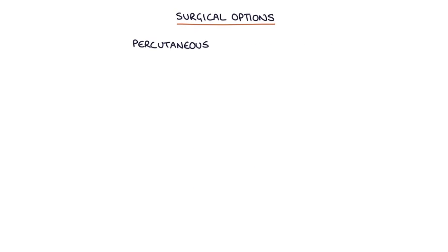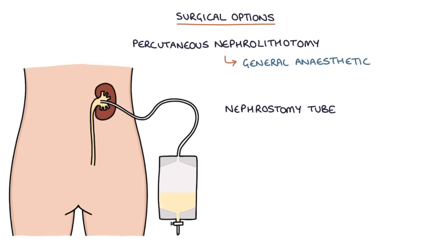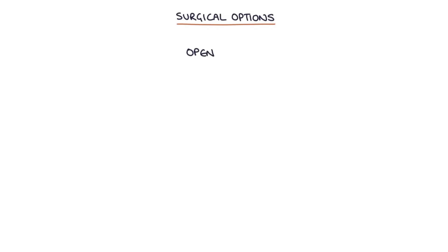Percutaneous nephrolithotomy is performed in theatre under general anaesthetic. A nephroscope — a small camera on a stick — is inserted via a small incision in the patient's back and through the kidney to assess the ureter. Tools can be used to break stones into smaller pieces and remove them, and a nephrostomy tube may be left in place to help drain the kidney. Open surgery can also access the kidneys to remove stones but is rarely needed as less invasive methods are usually effective.